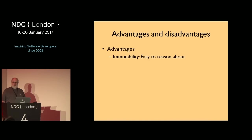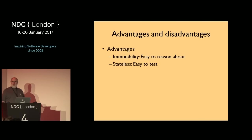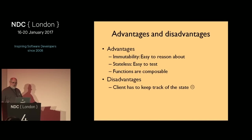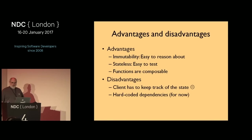The `|>` operator is F#'s pipe operator — it's not a plain vertical bar because that's reserved for something else. Pros of the functional turtle: because everything's immutable it's easier to reason about — no black box, easy to test, functions are composable. Downside: the client has to keep track of state, and we still have hard-coded dependencies. I'll talk about the functional equivalent of dependency injection shortly.